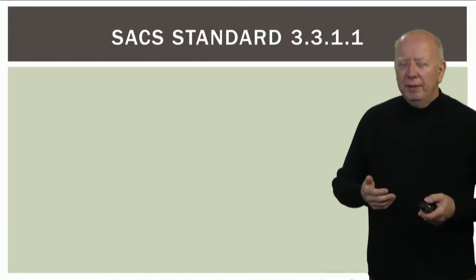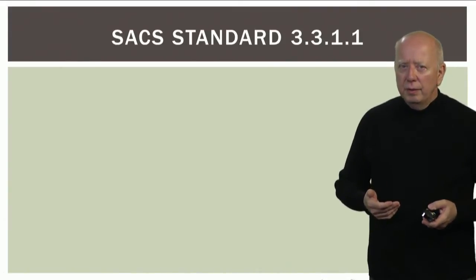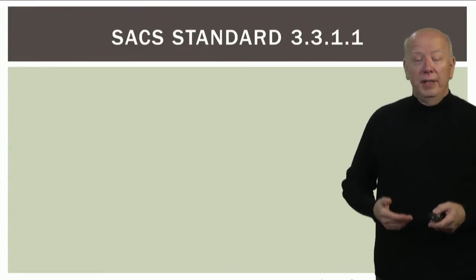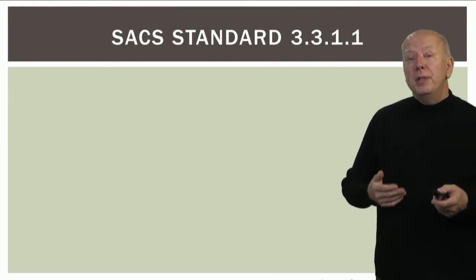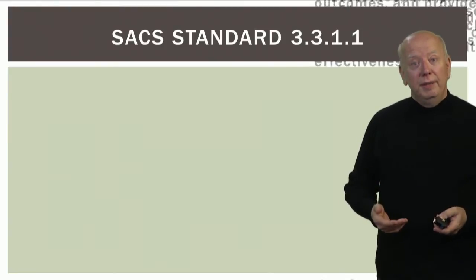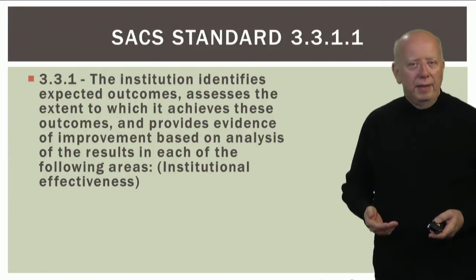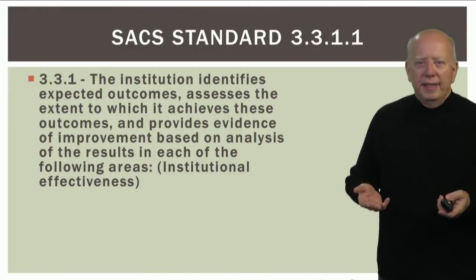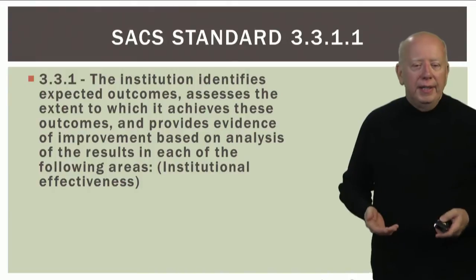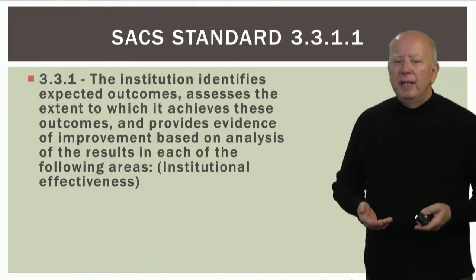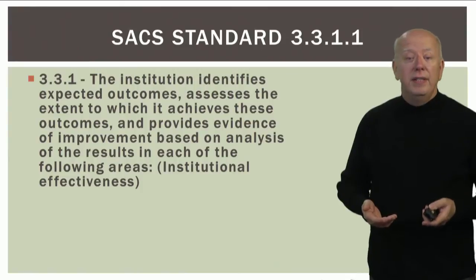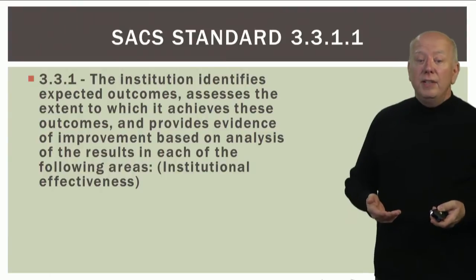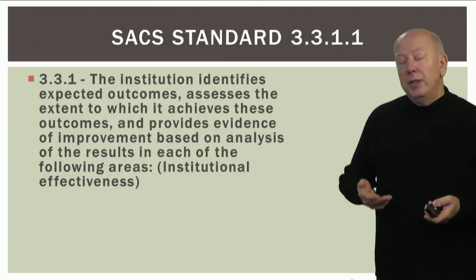Let's think about why we have to do this. The Southern Association of Colleges and Schools is our accreditor. The Commission on Colleges comes to our university every ten years, accredits our institution, and also expects us to collect data annually on student learning outcomes. The standard they require is Standard 3.3.1 on the SACSCOC.org website: that the institution identifies expected outcomes, assesses the extent to which it achieves these outcomes, and provides evidence of improvement based on analysis of the results. This is called institutional effectiveness.